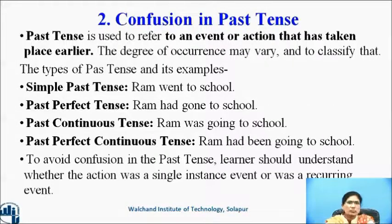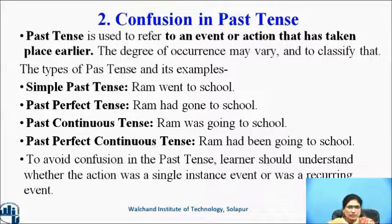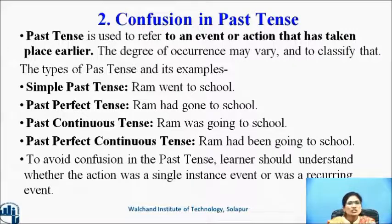Confusion in the past tense. Past tense is used to refer to an event or action that has taken place earlier. Simple past tense — Ram went to school. Past perfect tense — Ram had gone to school. Past continuous tense — Ram was going to school. Past perfect continuous tense — Ram had been going to school. To avoid confusion in the past tense, the learner should understand whether the action was a single instance or a recurring event.